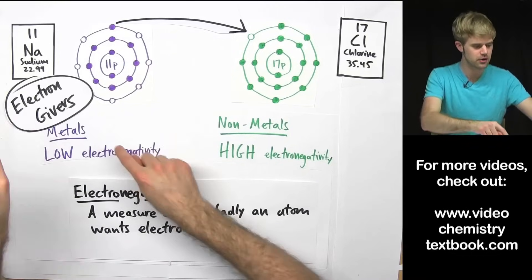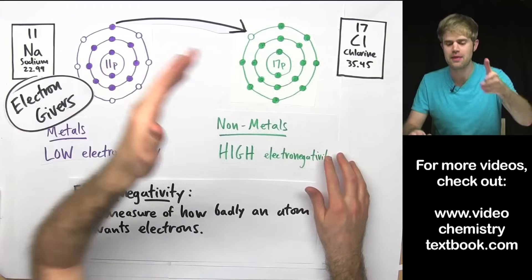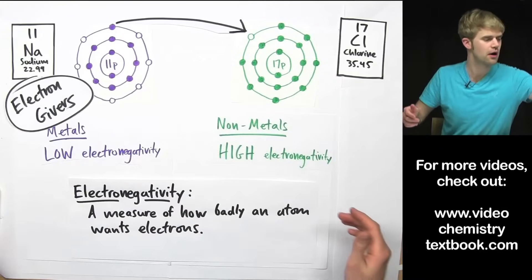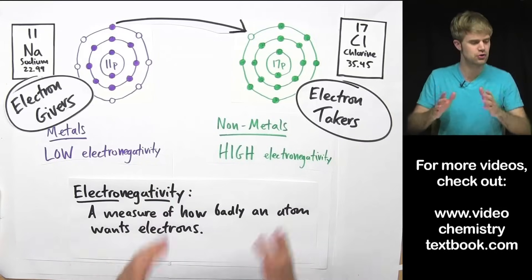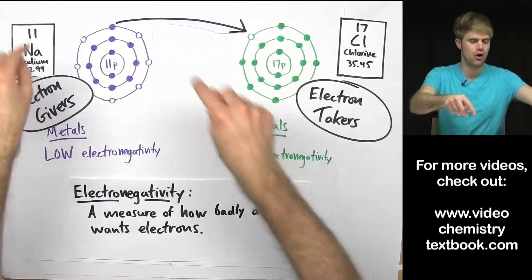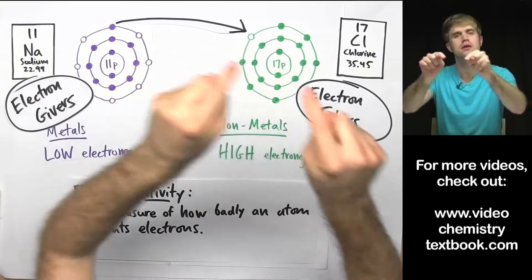And this is the way it always works in ionic bonding. The metals like sodium are the electron givers and the nonmetals like chlorine are the electron takers. Electrons always move from the metal to the nonmetal.